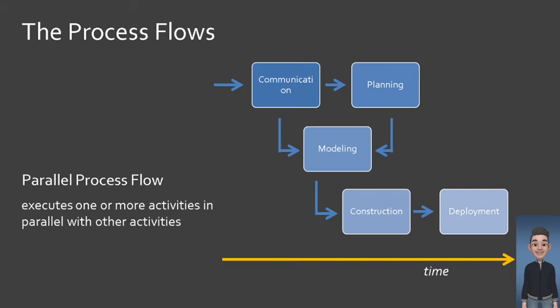And finally, we have the parallel process flow. In order to save time, some activities are executed in parallel with other activities. For example, as shown in the slide, modeling is conducted in parallel with communication and planning. This means that given some small amounts of information from the communication activity, models can already be created. Similarly, with preliminary designs, software construction can already be started.